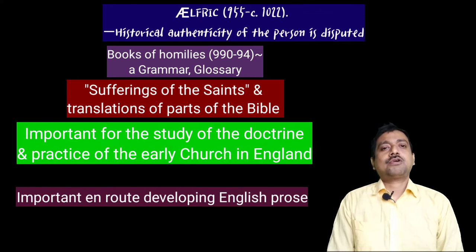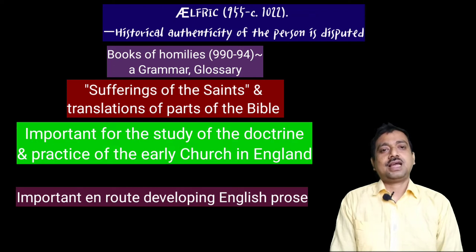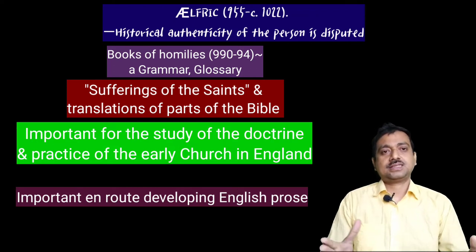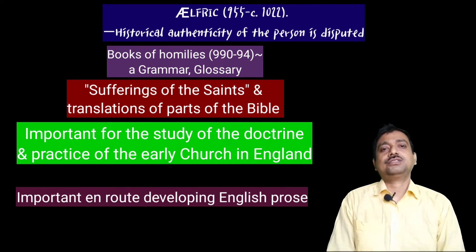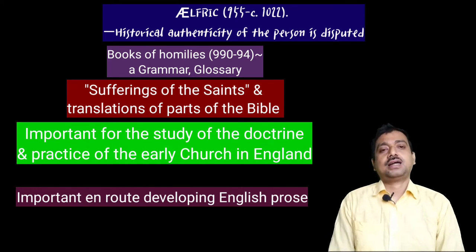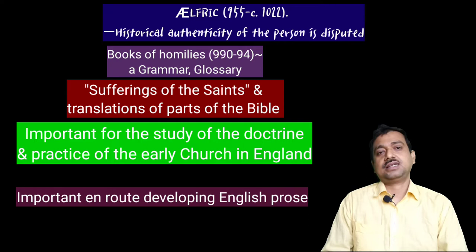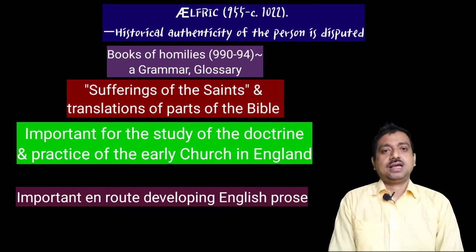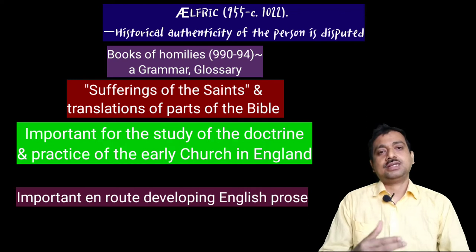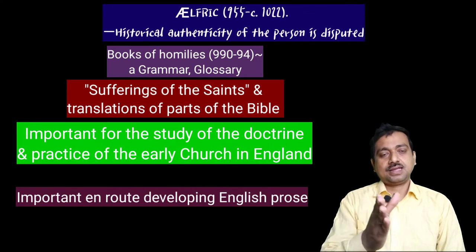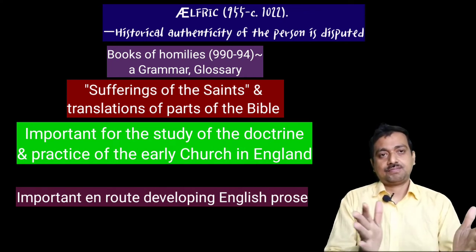Another character we find reference to is Ælfric, though the historical authenticity of this person is quite disputed. In his name we have a Book of Homilies, a kind of grammar, a glossary, a religious translation of the sufferings of the saints, and part of biblical translations. These books are important for the study of doctrine and practice of earlier Christianity, and also important for developing English writing. So both King Alfred and Ælfric are important for prose studies.